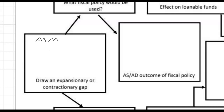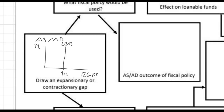We've got the ASAD graph. We've got price level and real GDP on the Y and X-axis. You want your LRAS, because that's going to tell us what full employment is. That's going to be Y full employment. We'll go ahead and show that we have an expansionary gap.